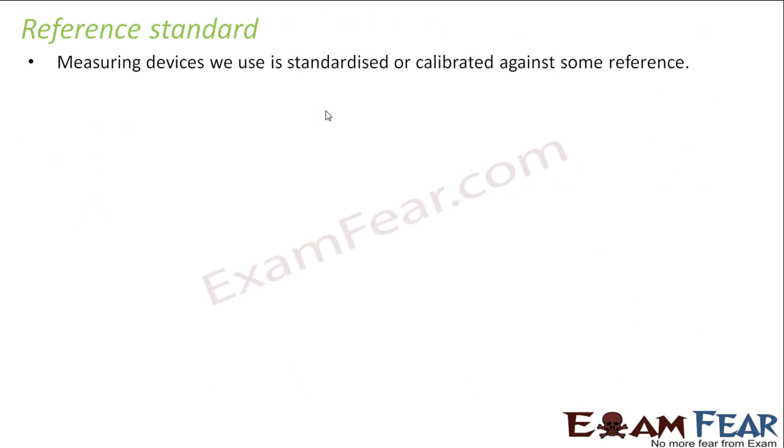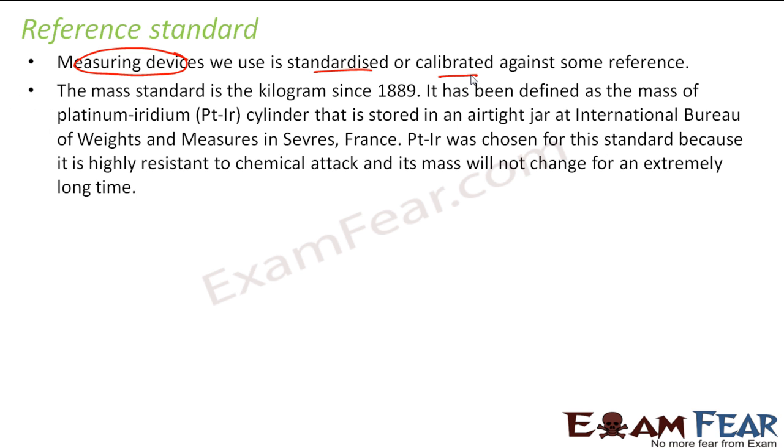As I told, international organization has all these standards defined. For example, for length, one meter, they say that the light distance, light path in these milliseconds. They have all these meter, Kelvin, everything defined, and all the other devices which we have, the measuring devices, we calibrate or standardize against these references. For example, if you see, the mass, as I told, this was defined in 1889. It is defined as the mass of platinum-iridium cylinder that is stored in an airtight jar at this International Bureau of Weights and Measures in France.